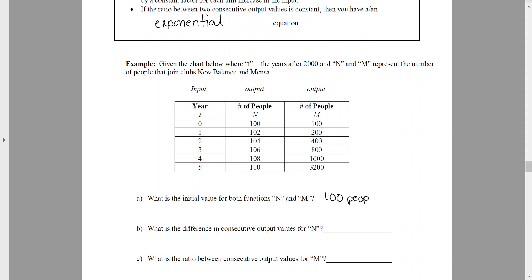So for the next part, what is the difference that implies subtraction in consecutive output values for N? So if I take a look at N, consecutive means one right after the other. So if I take 102 minus 100, that gives me the number two. And that would be for any consecutive pairs of numbers.